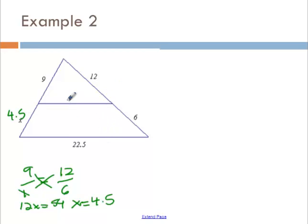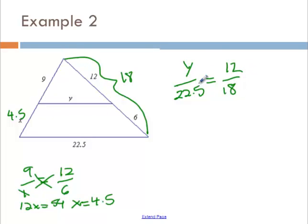This is not the same proportion for y. What I'm actually going to do is I'm going to look at the entire side here. I know that my two bases are proportional to the side. 12 is from the small triangle, just like y is from the small triangle. 22.5 is from the big triangle, just like 18.